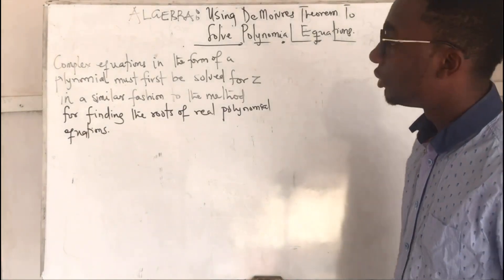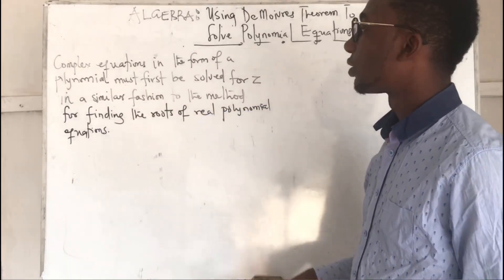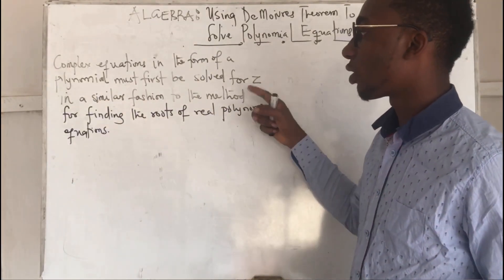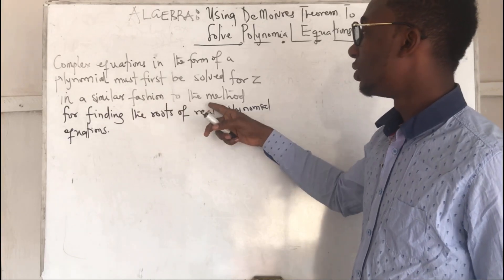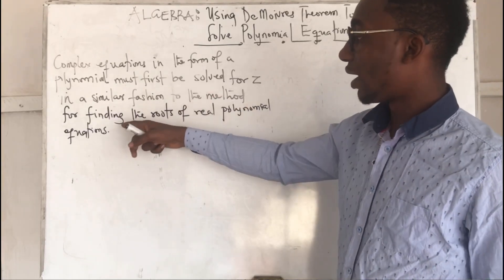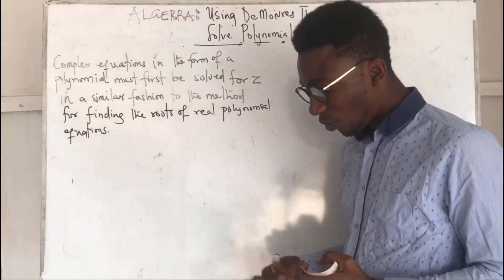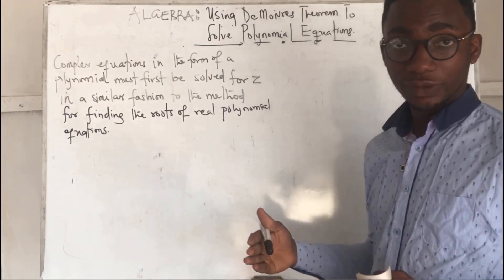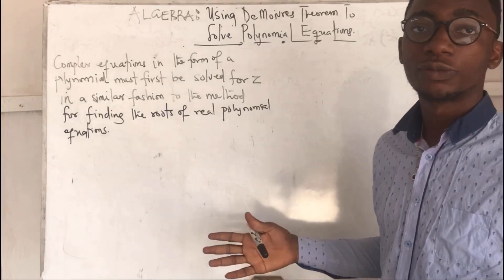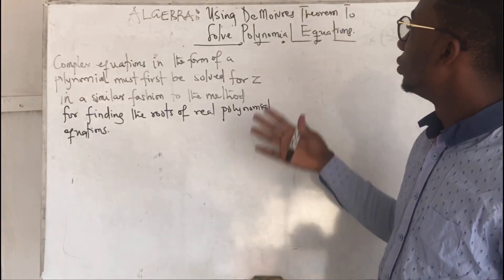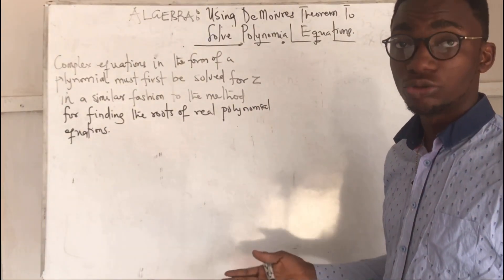Before we can do this, we realize that complex equations in the form of a polynomial must first be solved for z — that's the complex number — in a similar fashion to the method of finding the roots of the real polynomial equation. In the previous videos, we learned how to use De Moivre's theorem to find the nth roots of unity or of equations.